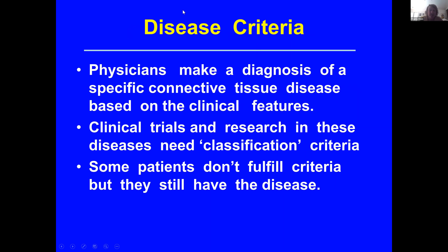When you see a physician and he or she reviews all your symptoms, they make a diagnosis of a specific connective tissue disease based on the clinical features. But when we're doing research and clinical trials in these diseases, we need some sort of criteria — what we call classification criteria. Many patients don't fulfill the criteria and yet they still have the disease; they just may not be able to participate in some clinical trials.